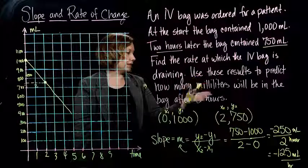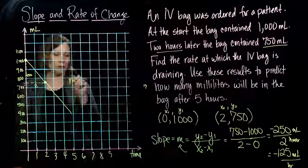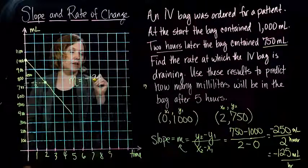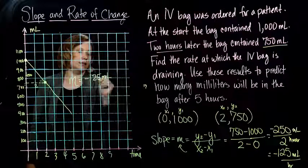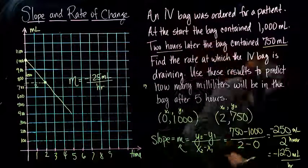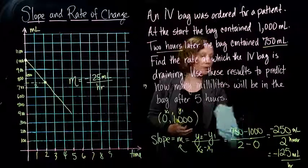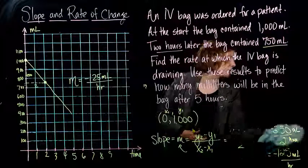Okay, so now we need to answer the last part of the question. So we found our slope, I'll write it over here, is negative 125 milliliters per one hour.